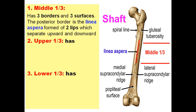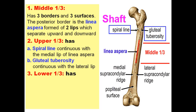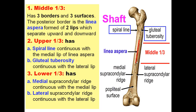The upper third has the spiral line and the gluteal tuberosity. The spiral line is continuous with the medial lip of the linea aspera; the gluteal tuberosity is continuous with the lateral lip. The lower third has the medial and lateral supracondylar ridges, continuous with the respective lips of the linea aspera. The surface between the two ridges is called the popliteal surface, which is related to the popliteal artery. Therefore, a supracondylar fracture of the lower end of the femur may compress the popliteal artery.